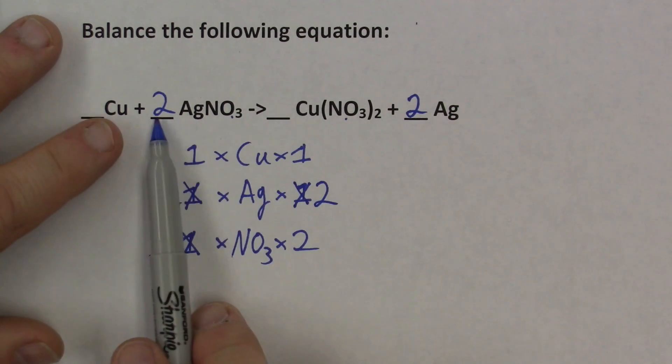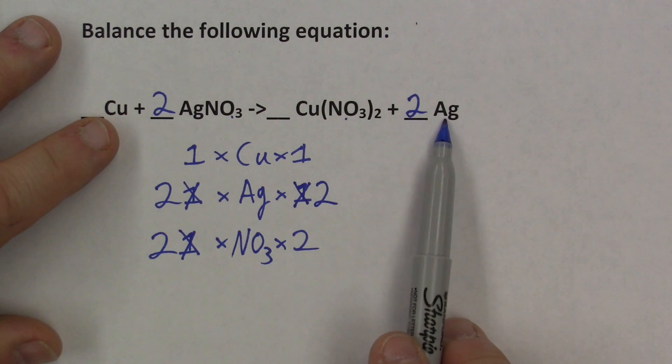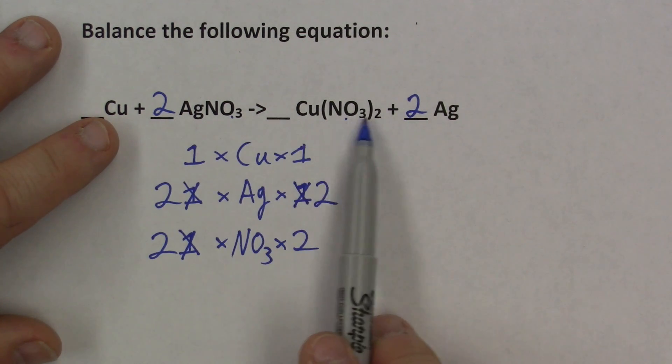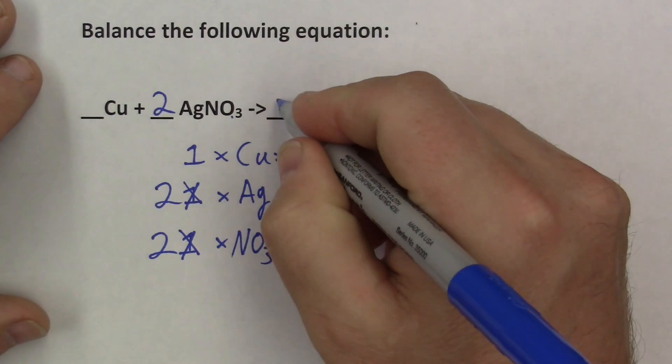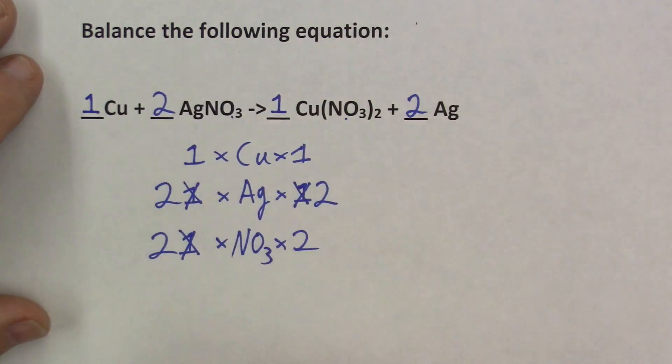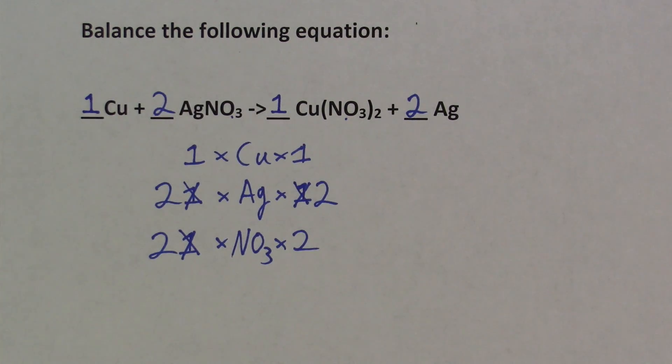One copper, one copper, two silver, two silver, two NO3, and two NO3. Just like before, if you like to write in the ones, you can. If you leave them blank, I will assume you meant one in that position. And that's how you balance an equation with a polyatomic ion.